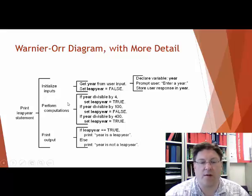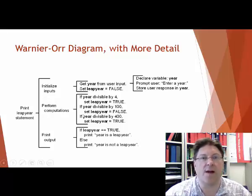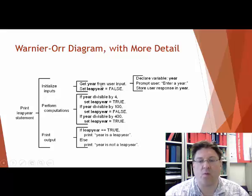But isn't that nice how you can take this step, get year from user input, and you can say, well, I've got to declare a variable. I've got to prompt the user. I've got to store the user response. So, you can go more and more detail until you get to the point where you just have to code it. Sometimes, too, like, for example, one of these things might be so obvious, it's not necessary to include it because any programmer would know that. Whereas, one or two lines might be very detailed. It might be tricky. Those need to be diagrammed carefully.